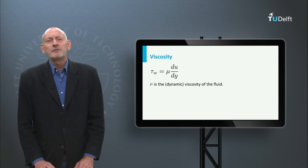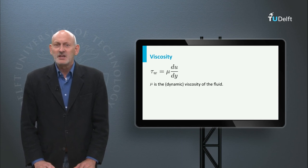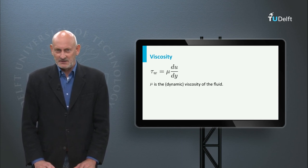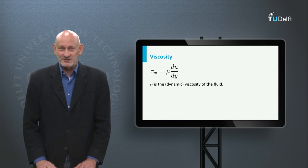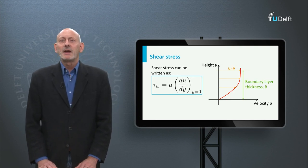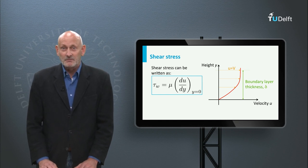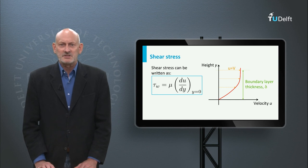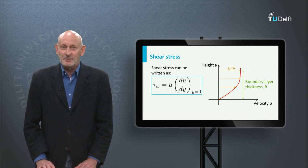Isaac Newton already formulated an equation for the shear stress. The shear stress tau is mu times the velocity gradient. Mu is the dynamic viscosity coefficient, or in short, viscosity. So for the shear stress on the surface of a flat plate, we are looking at the velocity gradient near the wall at y equals zero. Here you see the boundary layer velocity profile, with the velocity u varying from zero at the surface to the undisturbed free stream velocity v at the edge of the boundary layer.